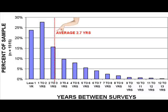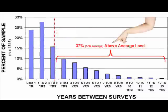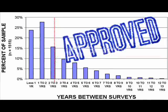But the distribution of the timing is also important. 37% of the sample was beyond the 2.7 year average. Long-tenured people are well represented, which reduces the risk of measuring just one cohort — like Gen Xers, Baby Boomers, and the like. This is a solid sample.